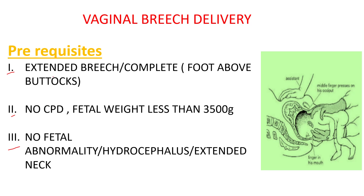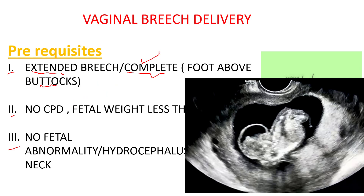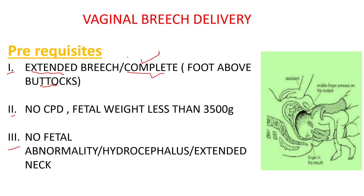If a pregnant lady insists on vaginal breech delivery, check these three criteria. First, look at the type of breech on ultrasound — if she has extended breech or complete breech, she may deliver vaginally. In complete breech, the feet should be above the buttocks. If the feet are below the buttocks, she cannot deliver vaginally. Footling breech cannot be delivered vaginally — never take that risk.